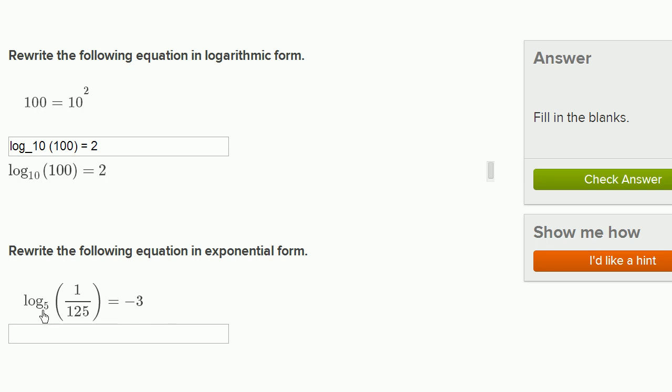This is saying the power that I need to raise 5 to to get to 1 over 125 is equal to negative 3. Or, 5 to the negative 3 power equals 1 over 125.